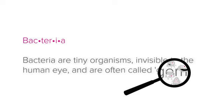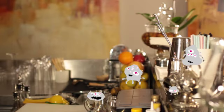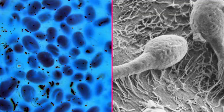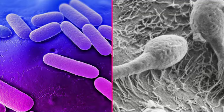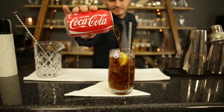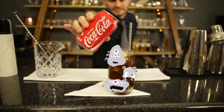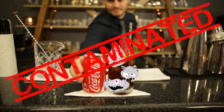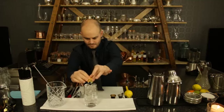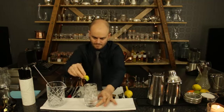We find bacteria everywhere — on the ground, in the air, even in our bodies — and most of these bacteria are not harmful. But some bacteria called pathogens are harmful. This means that whatever comes into contact with pathogens gets contaminated and becomes dangerous to consume. We must do everything we can to prevent the spread of pathogens through our drinks.